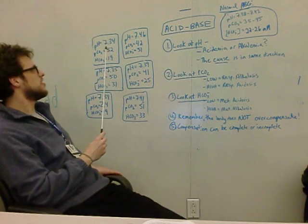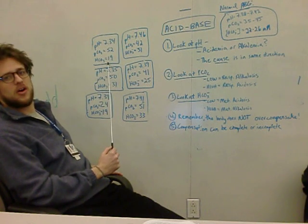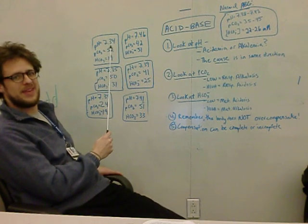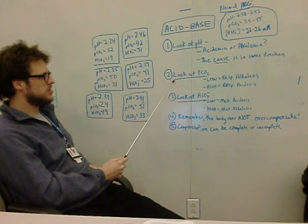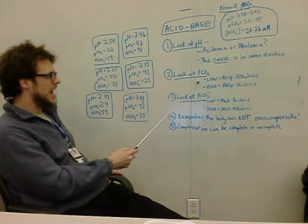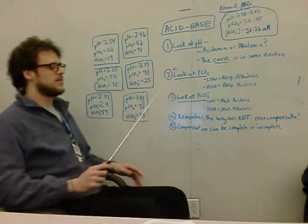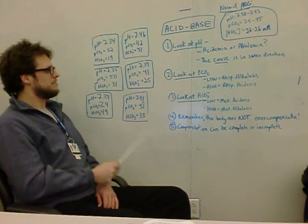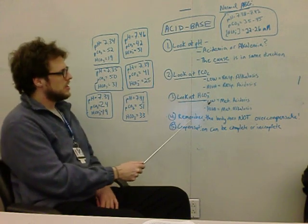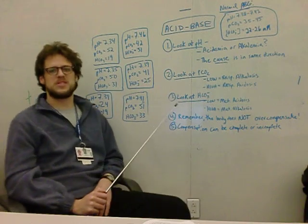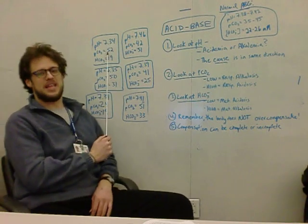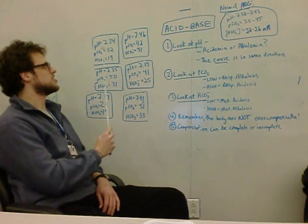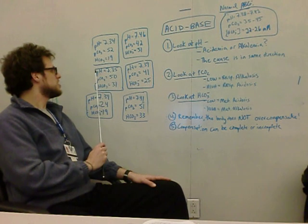Example one: pH 7.34, pCO2 52, bicarb 19. Follow the rules. Number one — look at the pH: it is low, so we have acidemia. Number two — look at the pCO2: it's 52, it is high, and high pCO2 tells me it's a respiratory acidosis, which is in the same direction as the pH. Number three — look at the bicarb: it's low, so that's a metabolic acidosis. This patient is acidemic because they have both a respiratory and a metabolic acidosis — both going in the same direction.